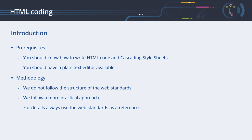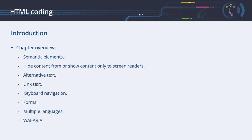This chapter does not follow the structure of the web standards. We will follow a more practical approach from basic to more complicated solutions. For details, always use the web standards as a reference. In this chapter, we will discuss how semantic elements can describe the meaning of content. We will see how we can hide content from or show content only to screen readers. We will introduce different ways to add alternative texts to visual content, show how to create useful link texts, demonstrate how code can influence navigation via the keyboard, give special attention to accessible forms, discuss the correct coding of web pages with multiple languages, and finally have a short look at the WAI-ARIA standard for creating accessible rich internet applications.